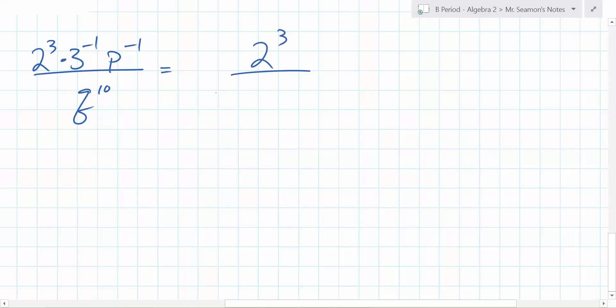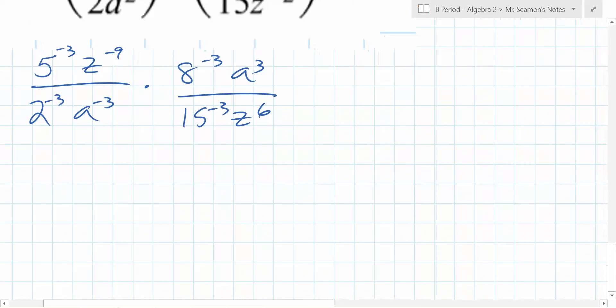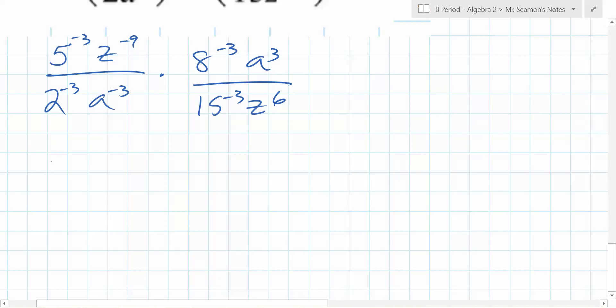You can do the 3 to the 3rd times p to the negative 1 times p to the what power? I like this. Good save there, Gabby. 5 to the negative 3, z to the negative 9. Do you see what I did to my z's right there? Yeah, I like that. And then this is a to the negative 3, a to the 3rd, 15 to the negative 3, z to the 6th. So yeah, you can flip all these things around to your heart's content to get positive things. So you said you liked 2 to the 3rd, a to the 3rd, over 5 to the 3rd, z to the negative 9. And what did you multiply it by? You could do it times 15 to the 3rd, a to the 3rd, over 8 to the 3rd, z to the 6th.